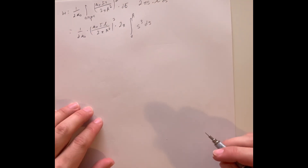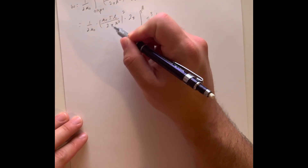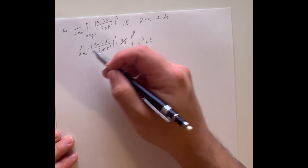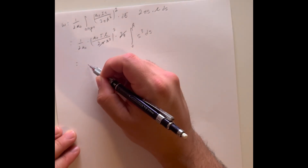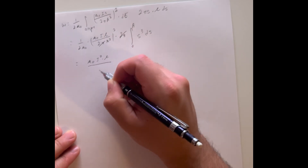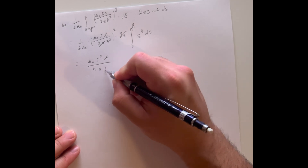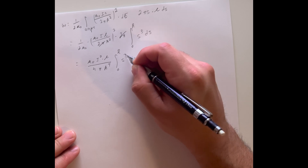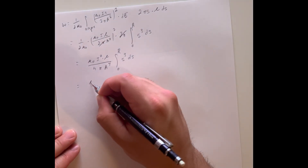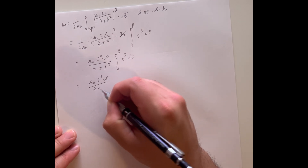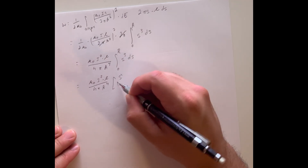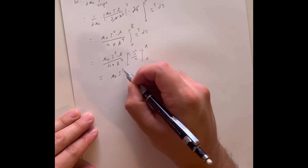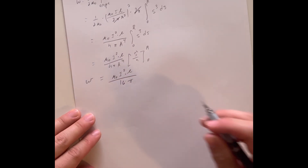Taking the constants out to the front and simplifying — the 2π cancels with one factor, and one μ₀ cancels — we get: (μ₀ I² L) / (4π R⁴) times the integral from 0 to R of s³ ds. Evaluating the integral gives s⁴/4 evaluated from 0 to R, yielding a final expression for stored energy of W = μ₀ I² L / (16π).